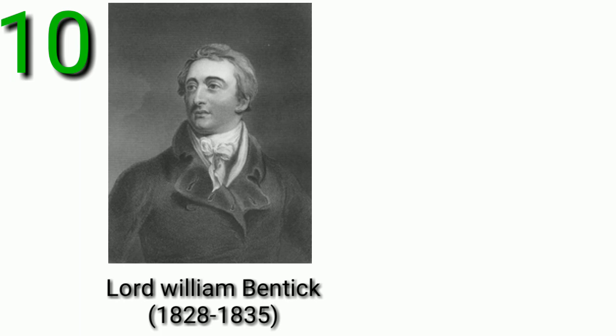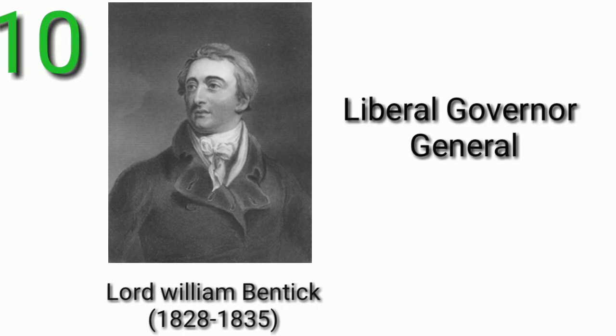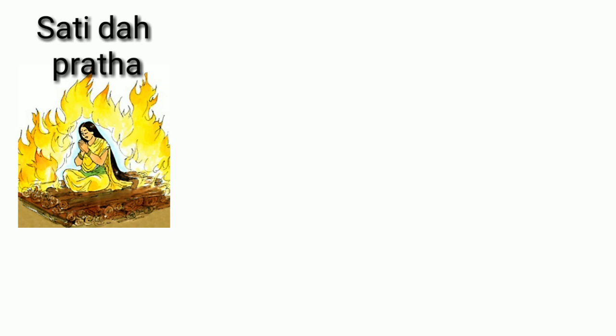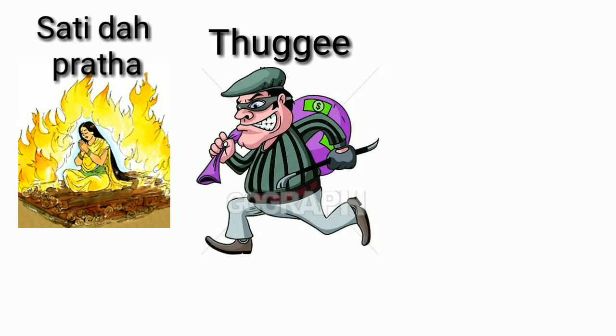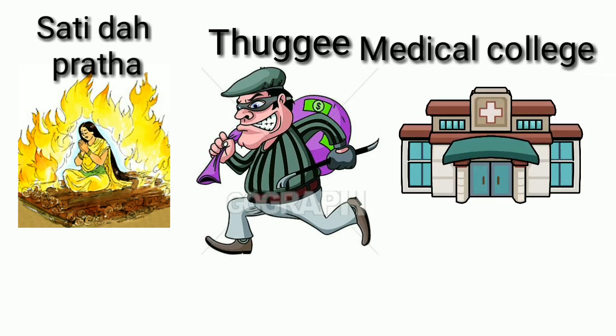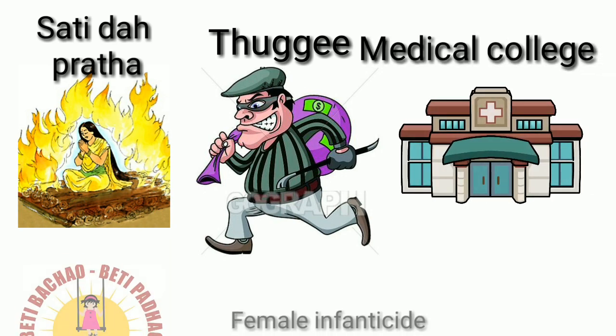Then Lord William Bentinck, a notably reformist Governor General who did significant work for social reform in India. He is also known as the liberal Governor General. He abolished Sati Pratha with the help of Raja Ram Mohan Roy, carried out suppression of Thuggee, and established a medical college in Kolkata.